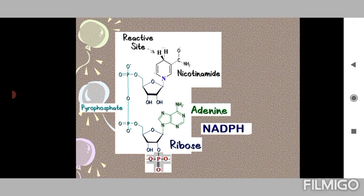NAD plus also accepts a hydrogen ion and two electrons to become NADH, just as NADP plus accepted two electrons to become NADPH.